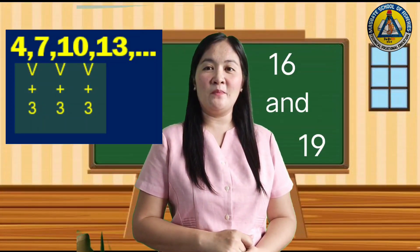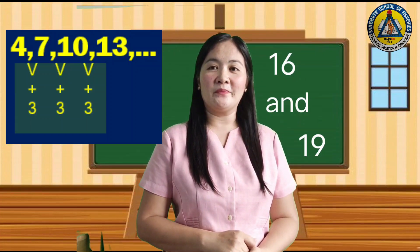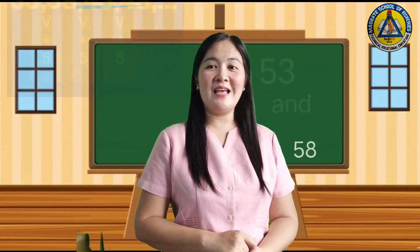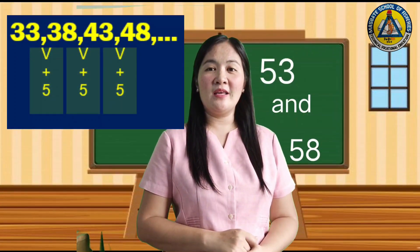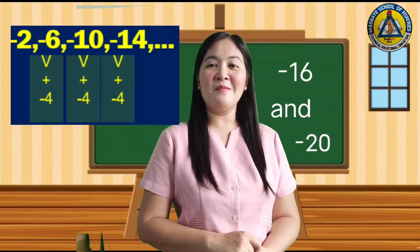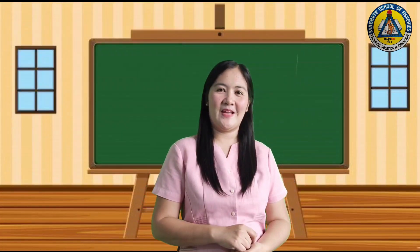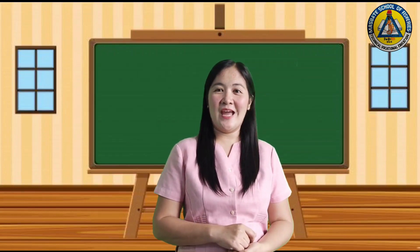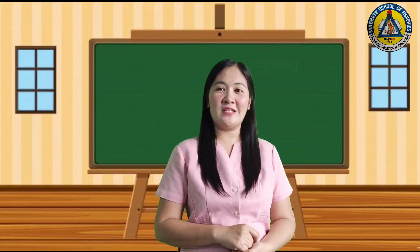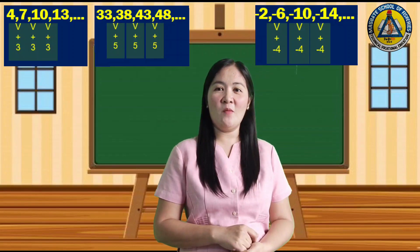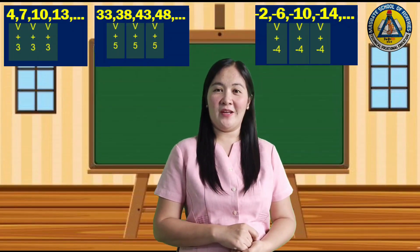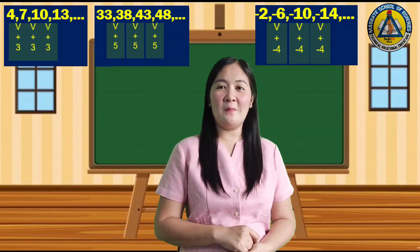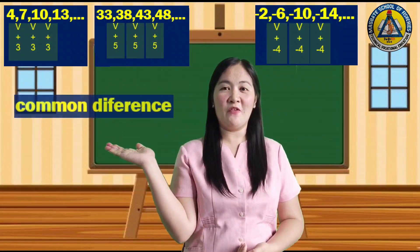Notice that a constant number 3 is added to the preceding term to get the next term. In item two, 5 is added to the preceding term, and negative 4 is added to the preceding term in item three. Notice that in each of these sequences, a constant or common number is added to the preceding term to get the next term.